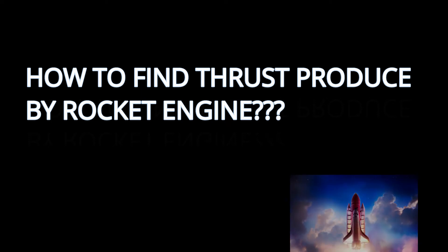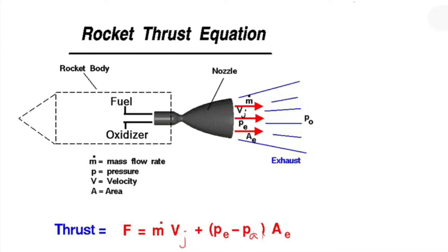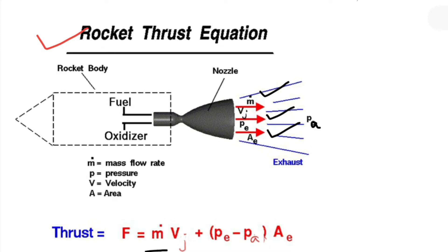How to find thrust produced by rocket engine? Let's find rocket thrust equation. Here you can see F is equal to m dot Vj plus Pe minus Pa into Ae. m dot is the mass flow rate of exhaust gas. Vj is the nozzle jet velocity. Pe is pressure at the nozzle exit. Pa is the ambient pressure. Ae is exit area of nozzle.